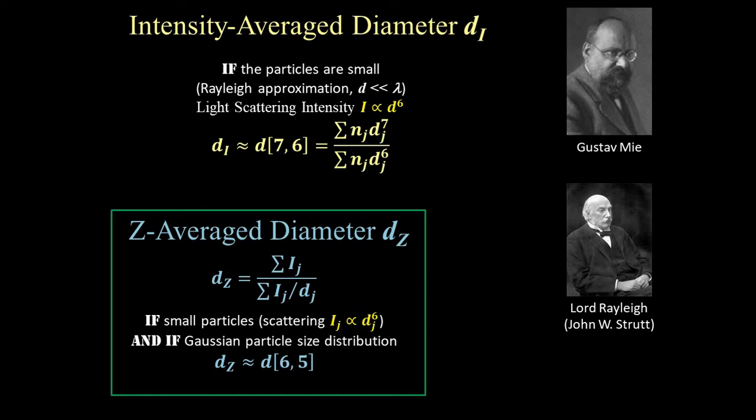dZ is the default value reported by the DLS software because it is the one that is most directly measured by the raw scattering data, with the fewest assumptions, and is therefore the most reliable.